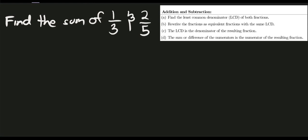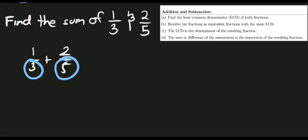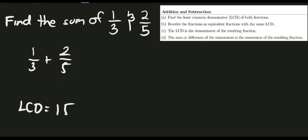What would be the value of our LCD? Since we have one over three plus two over five, to identify their LCD, we observe their denominators. We have three and five. The technique here is to multiply the given denominators. So three times five gives us an LCD of 15.